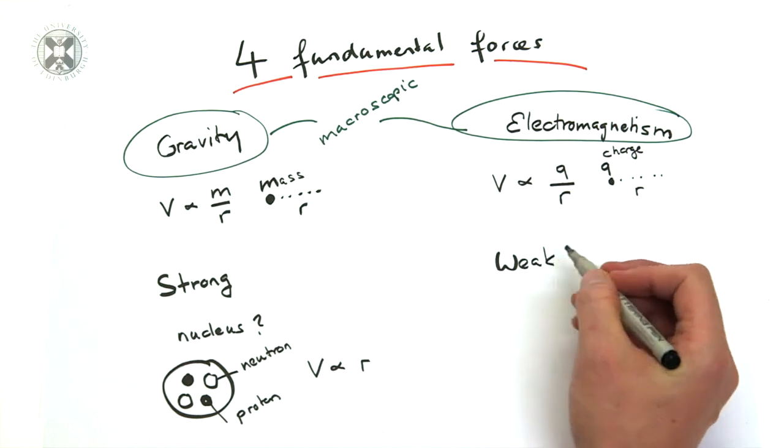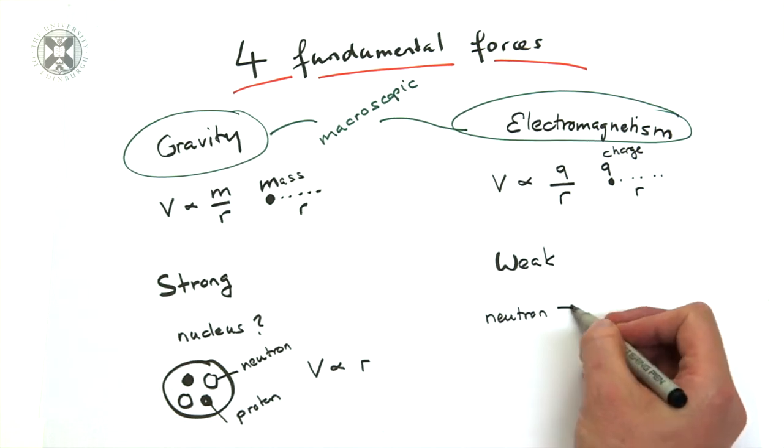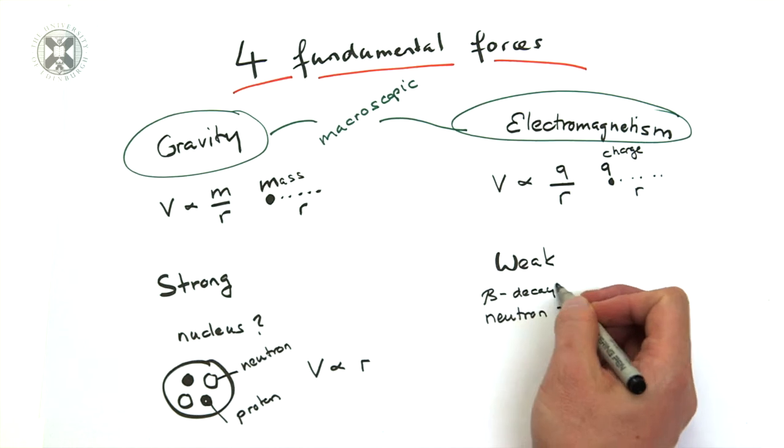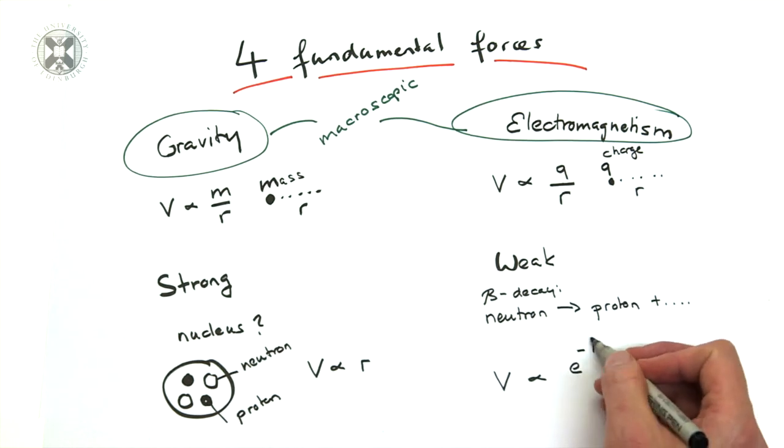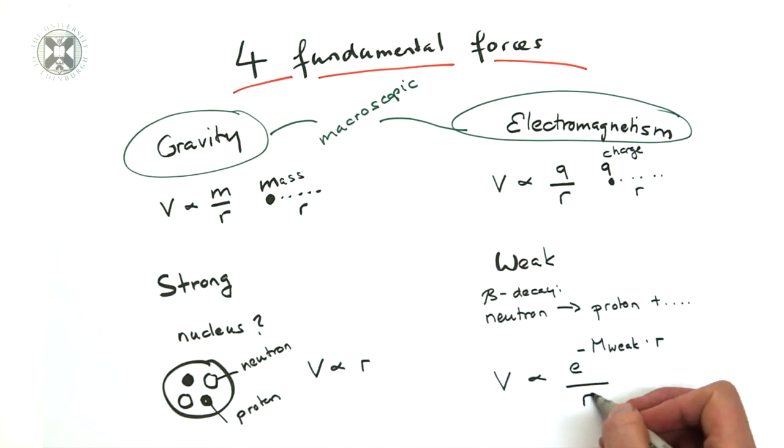Second, beta decay. The neutron decays into a proton plus other particles with very small probability. It therefore seems reasonable to assume that this decay is governed by a weak force.